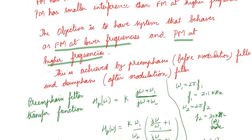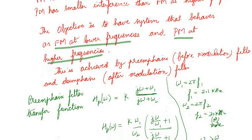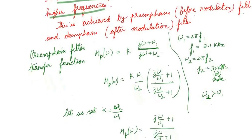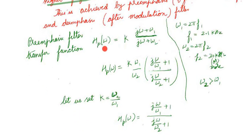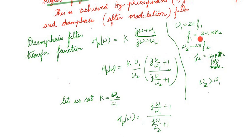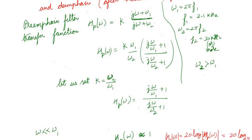The pre-emphasis filter transfer function is: H_p(ω) = k · (jω + ω₁) / (jω + ω₂), where ω₁ = 2πf₁ with f₁ = 2.1 kHz, and ω₂ = 2πf₂ with f₂ = 30 kHz or more — so ω₂ >> ω₁. Taking ω₁ outside the numerator and ω₂ outside the denominator, and setting k = ω₂/ω₁, the ω₁ and ω₂ terms cancel, simplifying the expression.